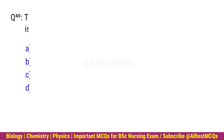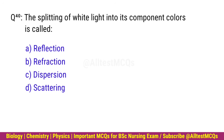Q40. The splitting of white light into its component colors is called? Correct option is C. Dispersion.